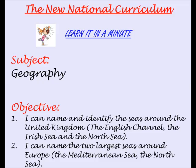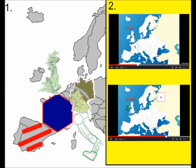Learn it in a minute. I can name and identify the seas around the United Kingdom and Europe. In our previous sessions we've looked at naming well-known countries in Europe and locating capital cities in Europe. Today we're looking at the seas that surround Europe.